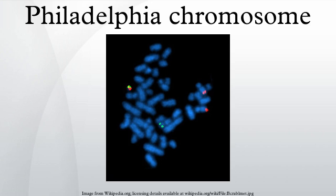The Philadelphia chromosome was first discovered and described in 1960 by Peter Nowell from the University of Pennsylvania School of Medicine and David Hungerford from the Fox Chase Cancer Center's Institute for Cancer Research, and was therefore named after the city in which both facilities are located. In 1973, Janet D. Rowley at the University of Chicago identified the mechanism by which the Philadelphia chromosome arises as a translocation.